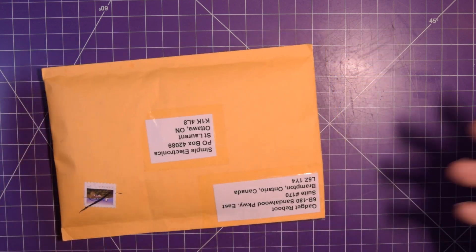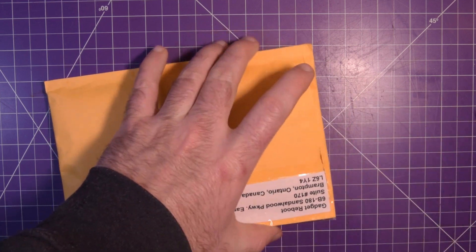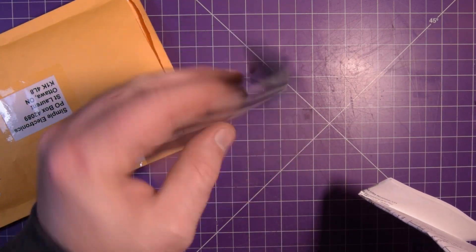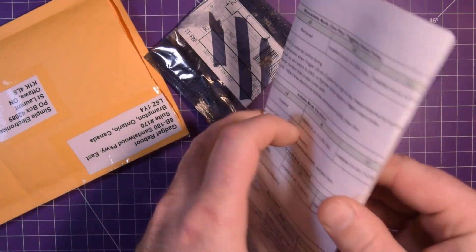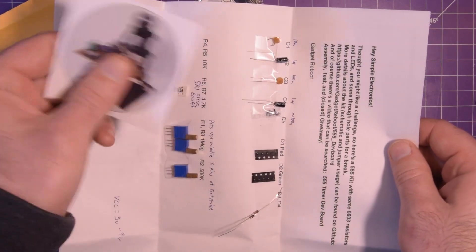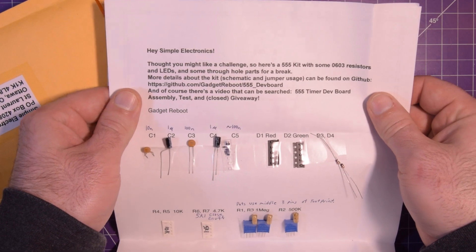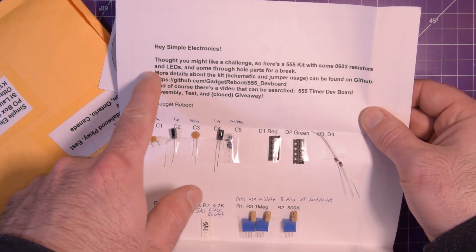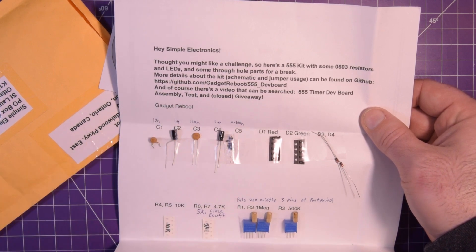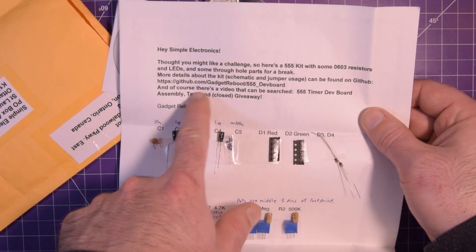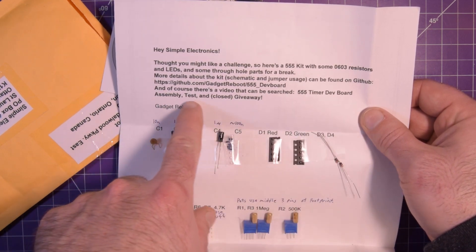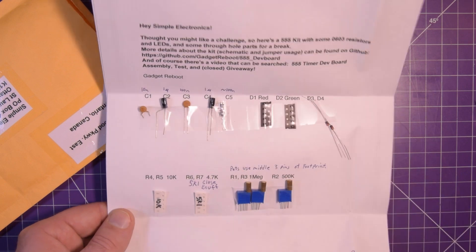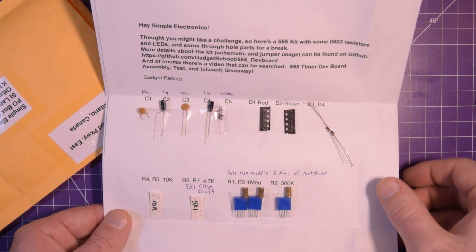I'm not 100% sure but I think he designed this. Okay well anti-static bag, very nice. What's this? Oh yeah look at that, I got swag! Pretty good. 'Thought you might like a challenge, here's a 555 timer kit with 0603 resistors.' Yeah my audience loves seeing me be challenged by stuff. 'LEDs, some through-hole parts for a break, more details about the kit on the GitHub.' So you guys can check out this GitHub and of course this video can be searched - yeah dev board assembly test and closed giveaway Gadget Reboot. Look at that, so 5 volts to 9 volts. I'm not 100% sure what this kit does but we're going to put it together and I can't wait.